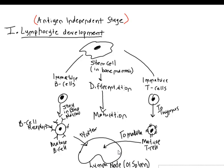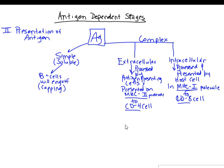B cells are located in the follicular region in the cortex, and T cells hang out in the medulla at the center of the action, awaiting activation. Once they receive a job responding to an antigen, they always retain that role. If they never encounter an antigen, they remain in the lymph nodes indefinitely.